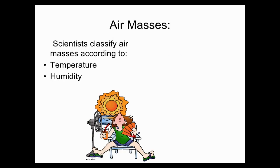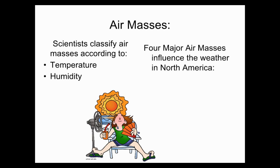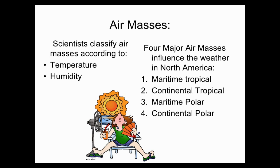Scientists classify air masses according to temperature and humidity. In North America, we have four major air masses that influence our weather: maritime tropical, continental tropical, maritime polar, and continental polar. You don't have any notes to take on this section, but please pay attention carefully so you understand where each mass is coming from and what type of weather it brings.